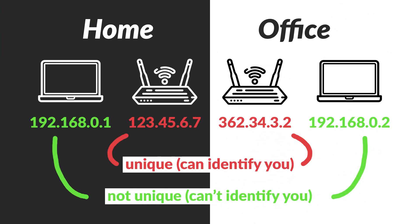Let's take an example: a home and an office, each with their own router. Each of the routers will have its own private and public IP addresses. If both the home and the office use a Linksys router, they will both have the same private address for the router. What will be different is their public IP address.